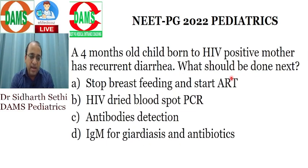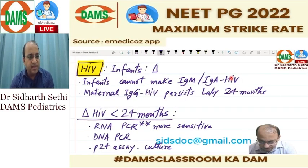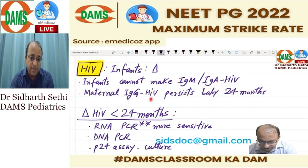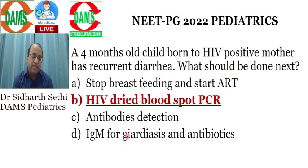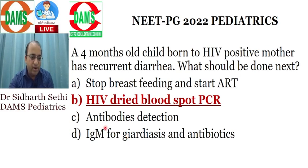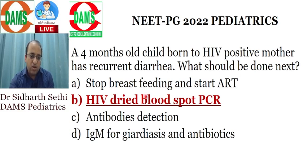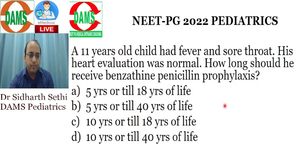There was a question on a four-month-old child born to an HIV-positive mother who has diarrhea — what would you do next? In babies less than 24 months, antibodies are not useful because maternal IgG crosses the placenta and may persist for almost 24 months. You should do a PCR — RNA or DNA PCR — by a dried blood spot, as per NACO guidelines. Antibody testing is of no use. It is not an indication to immediately start ART or stop breastfeeding.